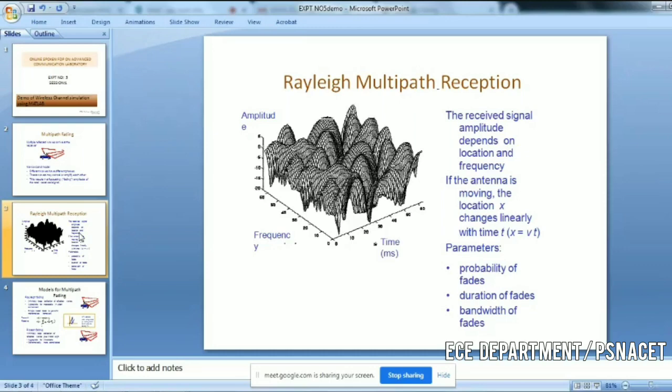If the antenna is moving, we take that into account. The parameters which cause fadingness include the probability of fades, the duration of fades, and the bandwidth of fades in Rayleigh multipath reception.